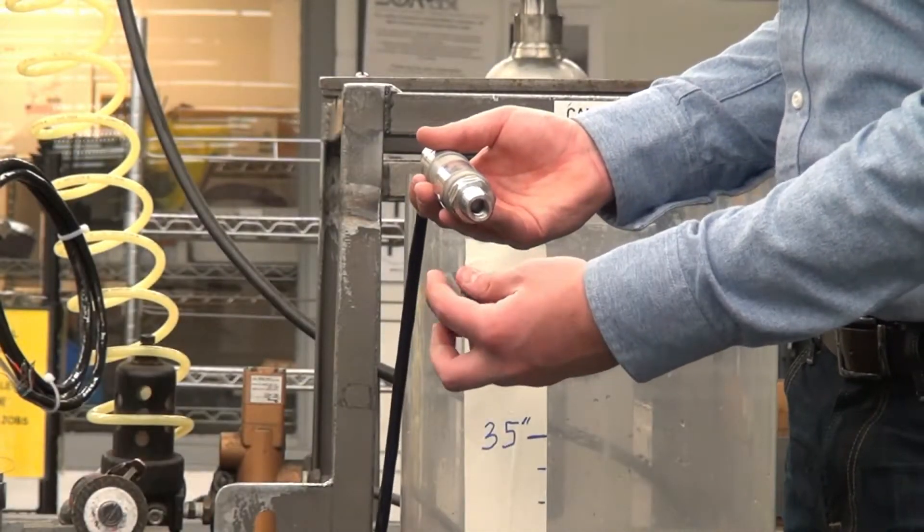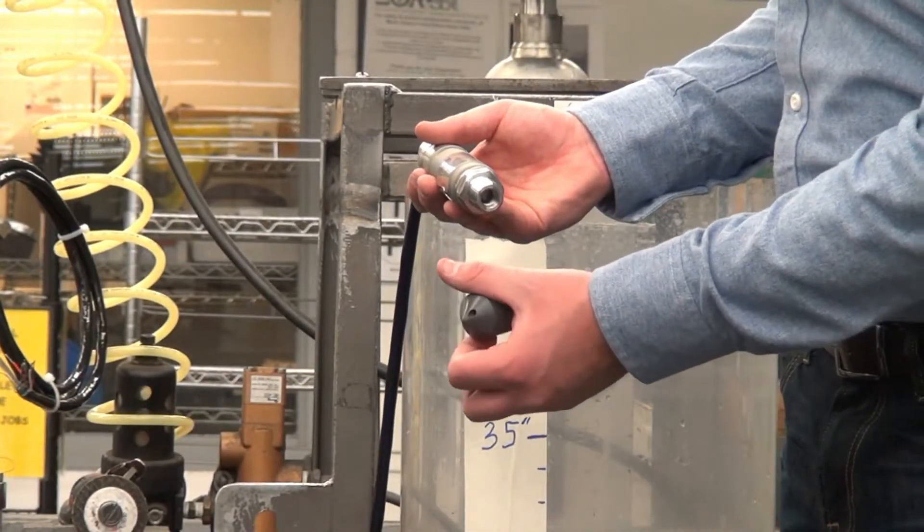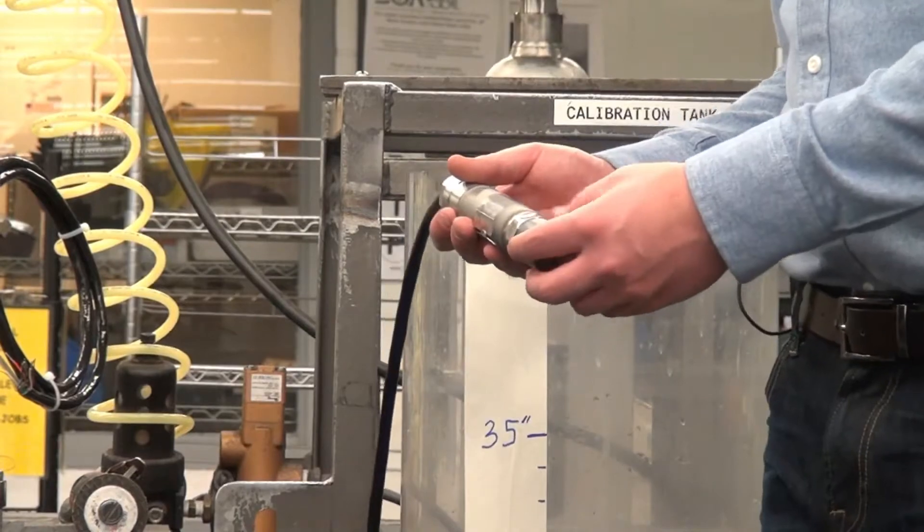The PVC nose cone is actually self-flushing as well. It has two holes at different heights that give you a self-flushing feature which continuously flows and keeps liquid from building up inside the pressure port.